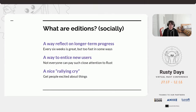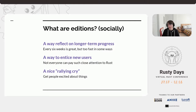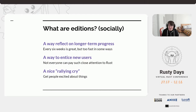An edition is largely a social thing — a way to reflect on the longer-term progress of the language and the project as a whole. Because we release every six weeks, it's really hard to remember how much work we've done. Releases come out all the time in small chunks, so it's easy to forget just how far things have come. It's been almost five years since Rust 1.0, and that rapid pace makes it easy to lose track.